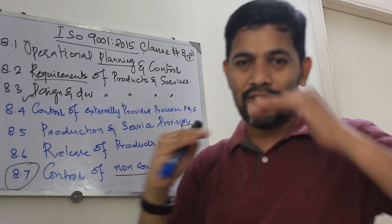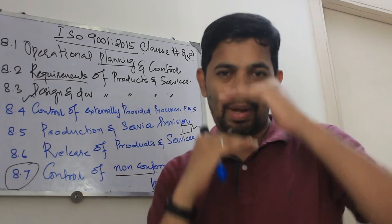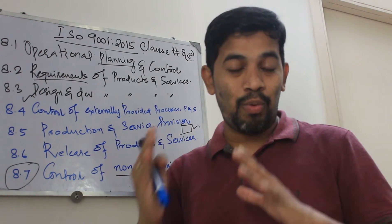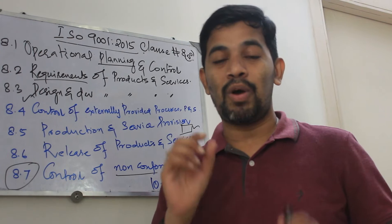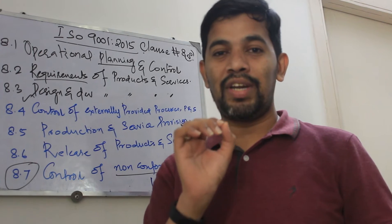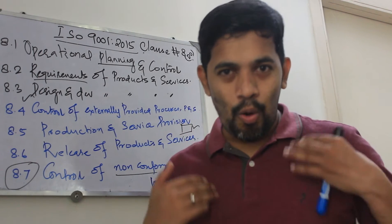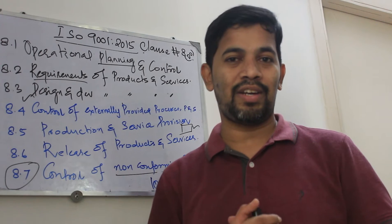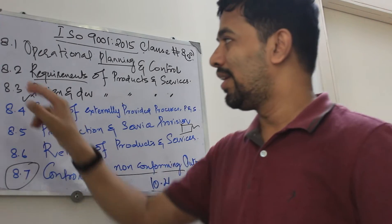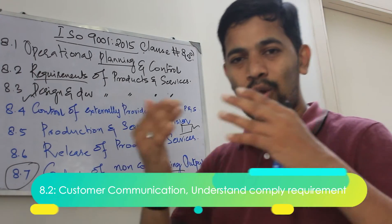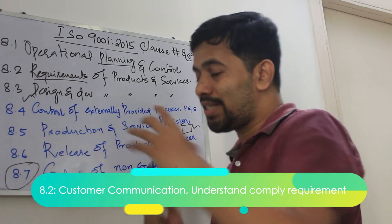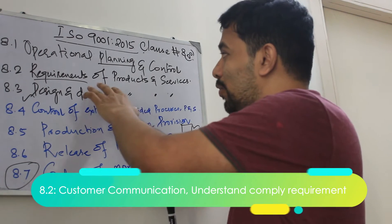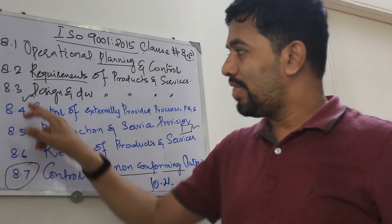8.2 has got four subclasses. The first is 8.2.1, which talks about customer communication — how do you communicate with the customer, how do you have records. It also covers how do you understand the requirement and how do you comply with the requirement.